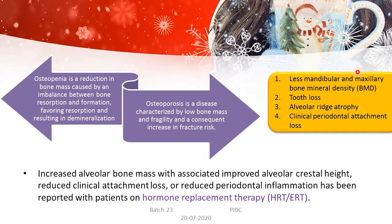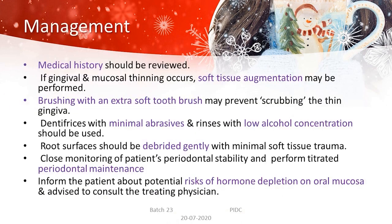In the oral cavity, menopause-related changes are reflected as reduced mandibular and maxillary bone mineral density, tooth loss, alveolar ridge atrophy, and clinical periodontal attachment loss. Studies have shown that hormone replacement therapy — replacing the lost estrogen — results in increased alveolar bone mass with improved alveolar crestal height, reduced clinical attachment loss, and reduced periodontal inflammation.